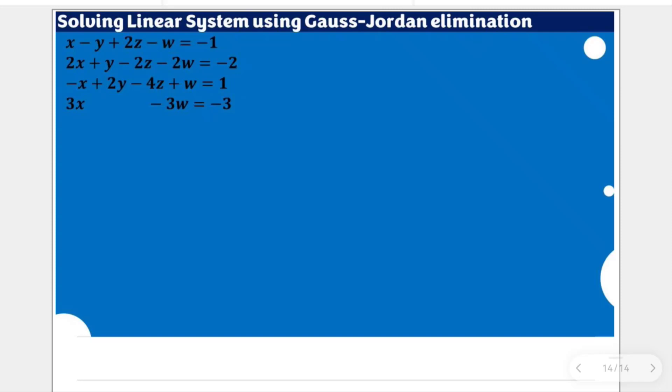For this video, we are going to apply the Gauss-Jordan elimination, which is additional, or there is additional process as compared to Gaussian elimination. It includes a backward phase which will allow us to come up with a reduced row echelon form.